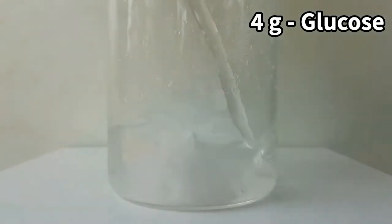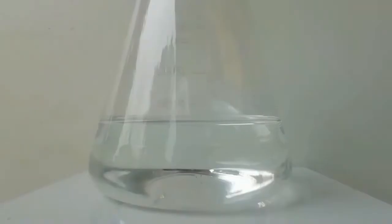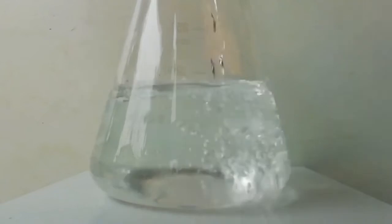Then 4 grams of glucose is dissolved in 100 milliliters of distilled water and mixed with the solution of sodium hydroxide.